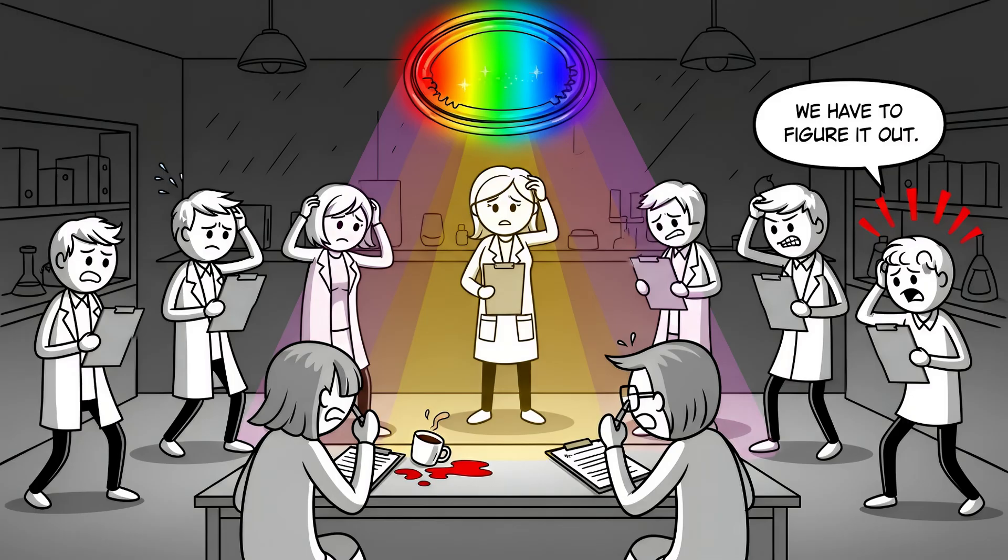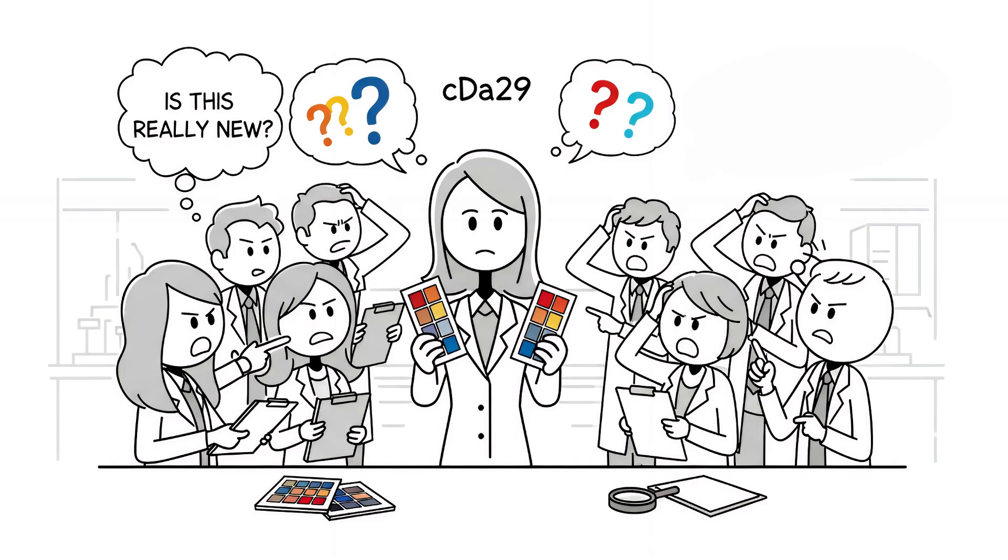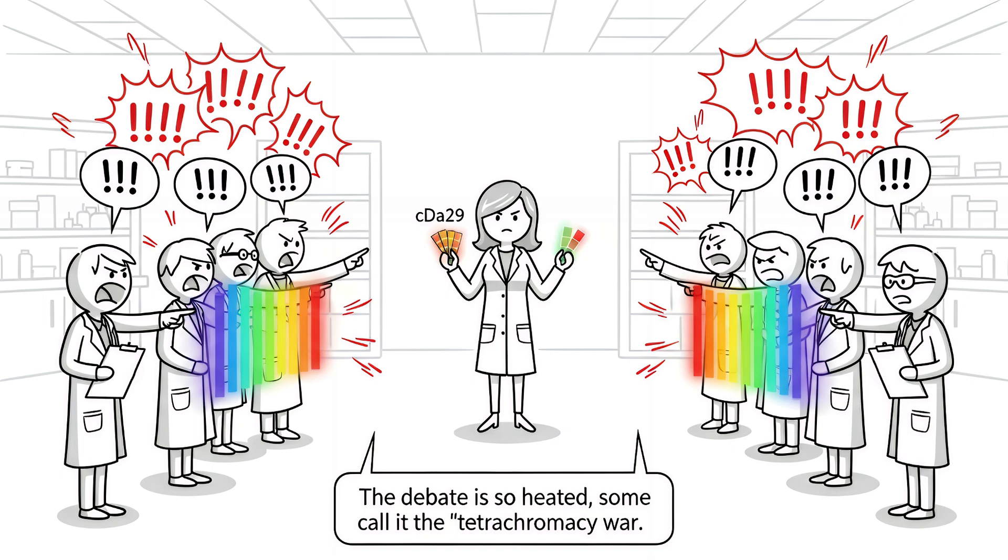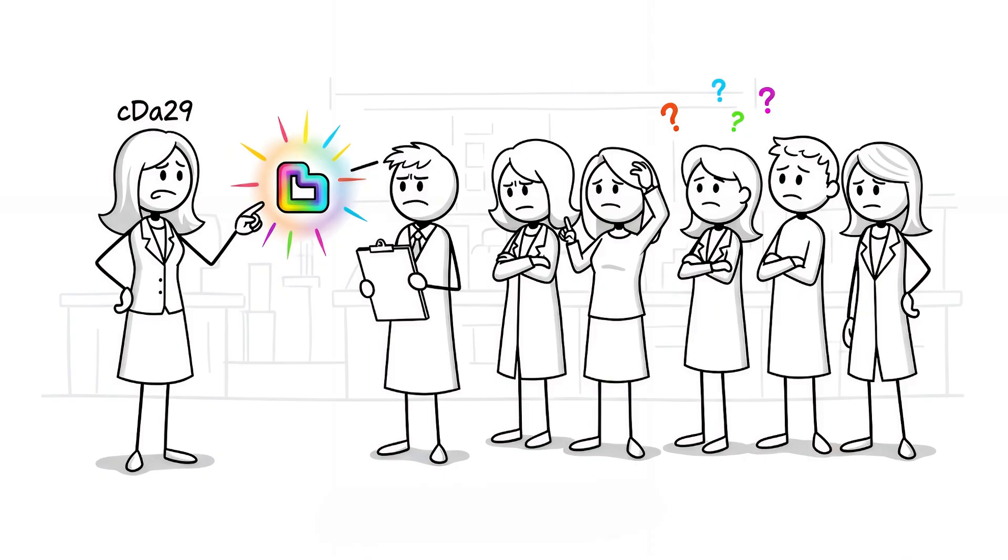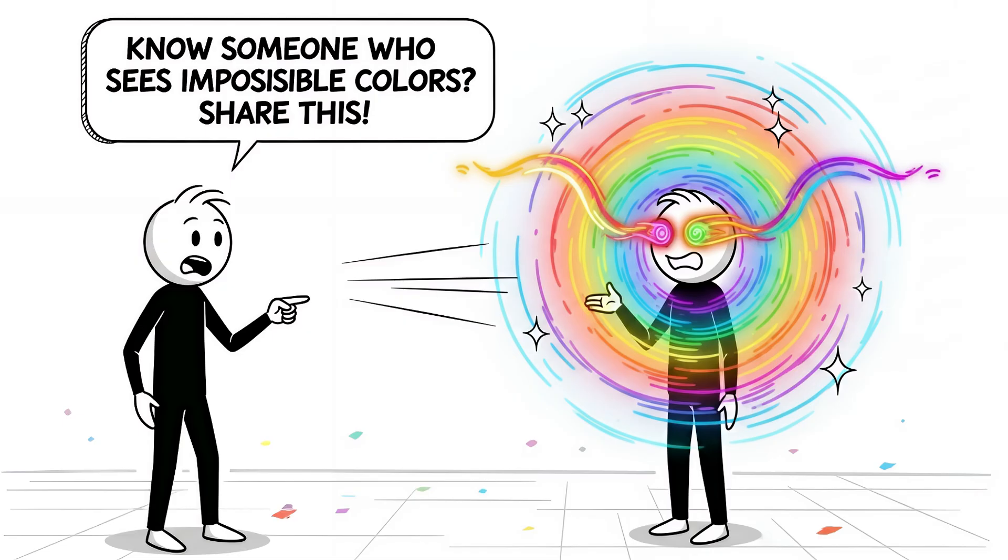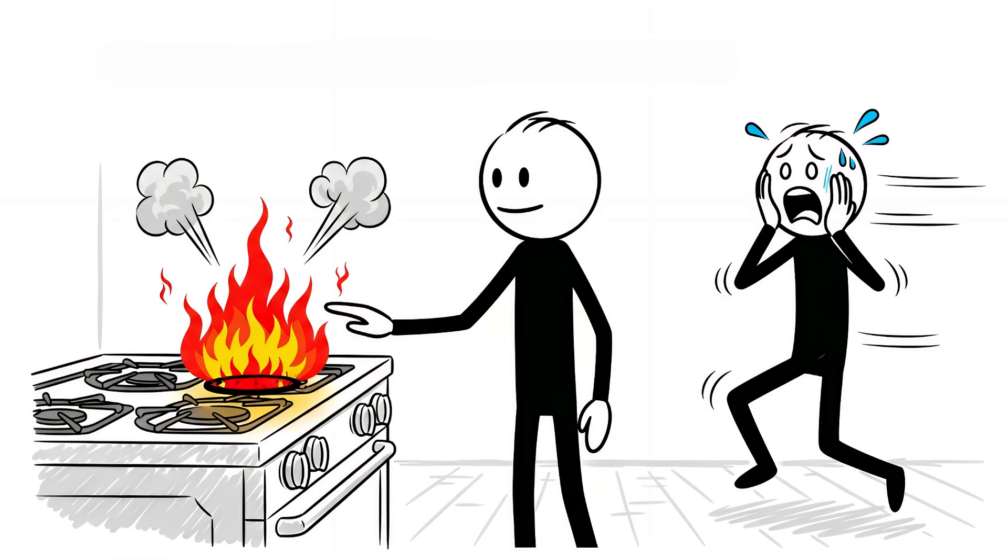She spent 40 years thinking everyone saw what she saw. But here's the controversy that keeps scientists up at night. What if she's just better at distinguishing shades, not seeing new ones? The debate is so heated, some call it the tetrachromacy war. She sees a secret world hiding in plain sight, and she'll never be able to prove it to you. If you know someone who sees colors that don't exist, send them this video. Let's see if they can prove it in the comments.